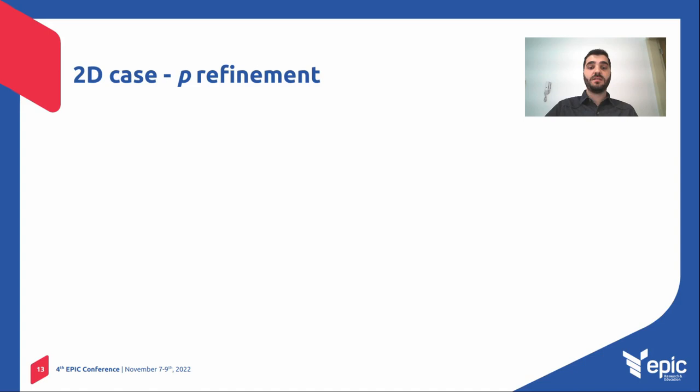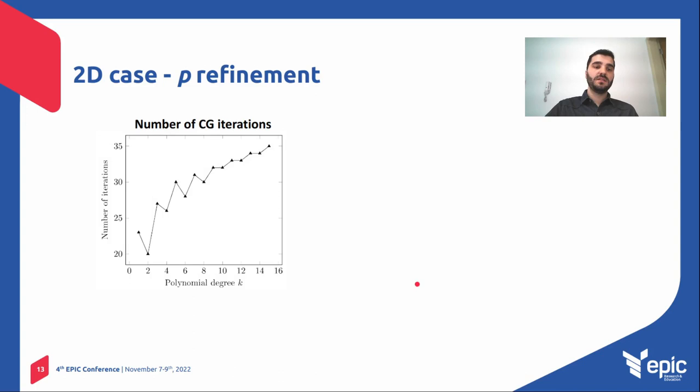Now looking at the p-refinement, which means that I have a constant finite element mesh and discretization, and I'm changing the polynomial degree of the approximation.